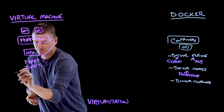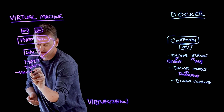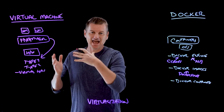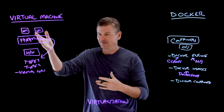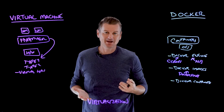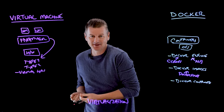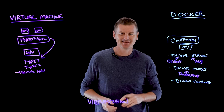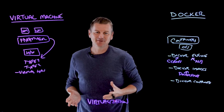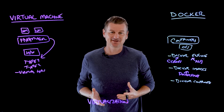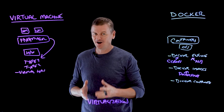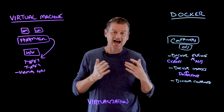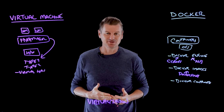The other components to be aware of include virtual hardware, which refers to the emulated components of a virtual machine — things like a virtual CPU, virtual memory, virtual storage, and virtual network interfaces. These components are presented to the guest operating system as if they were real hardware, and the hypervisor is responsible for managing and allocating these virtual resources to each VM.